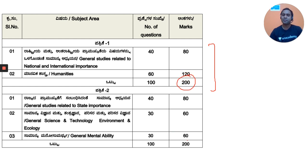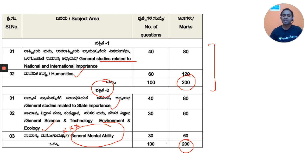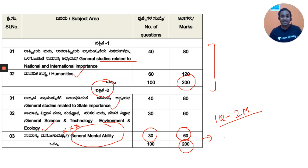There will be two papers. Paper 1 is for 200 marks covering general studies related to national and international importance and humanities. Paper 2 is also for 200 marks covering general studies related to state importance, general science and technology, environment and ecology, and general mental ability — which is 30 questions for 60 marks, with 2 marks per question. This is a huge weightage for mental ability in your KPSC exam.